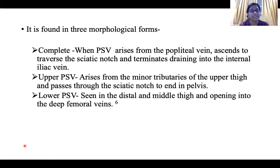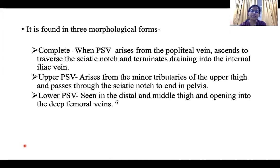The persistent sciatic vein is found in three morphological forms. Complete form: the persistent sciatic vein arises from the popliteal vein, ascends to traverse the sciatic notch, and terminates draining into the internal iliac vein. Upper persistent sciatic vein arises from minor tributaries of the upper thigh and passes through the sciatic notch to end in the pelvis. Lower persistent sciatic vein is seen in the distal and middle third of the thigh and opens into the deep femoral vein.